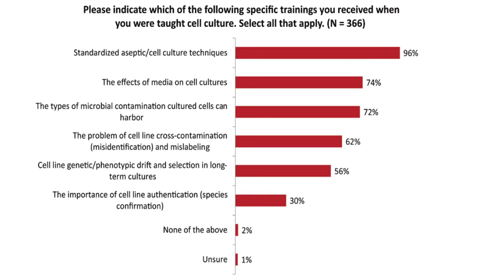When it comes to training, only 62% of respondents had received specific training on the problems of cell line misidentification and mislabeling, and less than one-third were trained on the importance of cell line authentication as a quality control measure for species confirmation. Furthermore, only 65% of respondents indicated that their lab follows specific written procedures for the handling and storage of cultured cells and cell lines.